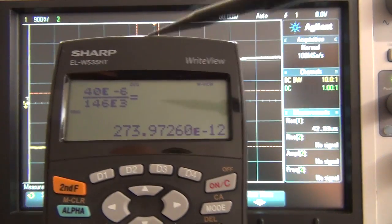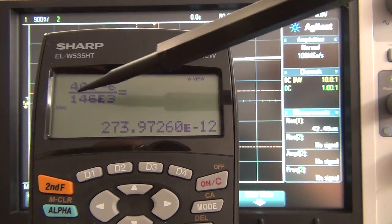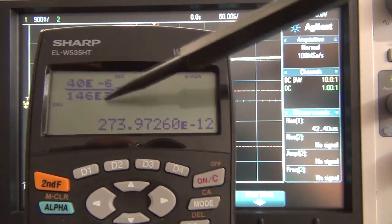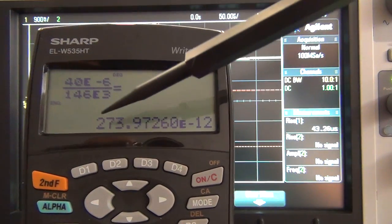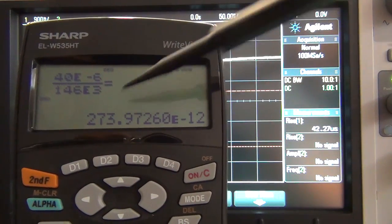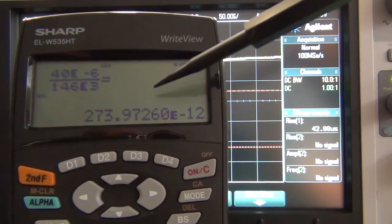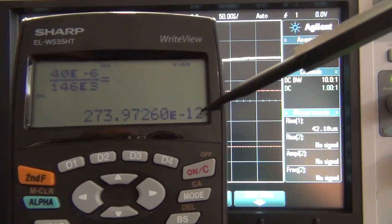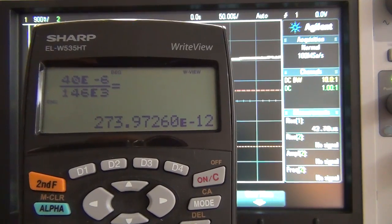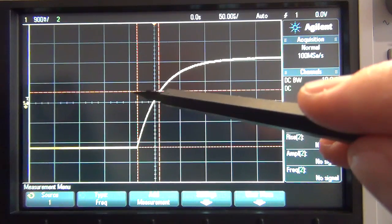I've just gone and typed that into the calculator. So we've got our 40 microseconds, that's to the minus 6, divided by the resistance which is 146k, that's to the 3, and that is equal to 273 or near as damn it 274 picofarads. You've got milli, micro, nano, pico to the minus 12. So there we go, that's how you can work out the capacitance by looking at that time space at the 63.2% mark.